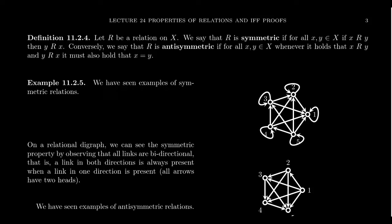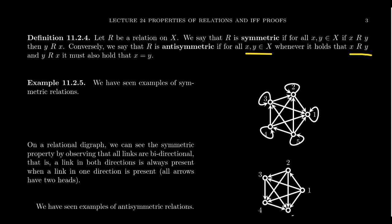We say that R is symmetric if for all points X and Y inside the set, if X is related to Y then Y is related to X. The opposite notion is anti-symmetry: R is anti-symmetric if whenever X is related to Y and Y is related to X, it must be the case that X equals Y. So symmetry means you always have relations in both directions, while anti-symmetry means that only happens when X equals Y.